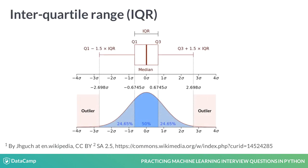The interquartile range, or IQR, is defined as the difference of the values at the first and third quartiles, which are at 25% and 75% respectively, with the median exactly between at 50%. In general, those points above and/or below 1.5 times the IQR should be suspected as possible outliers, which corresponds to the shaded regions seen here.